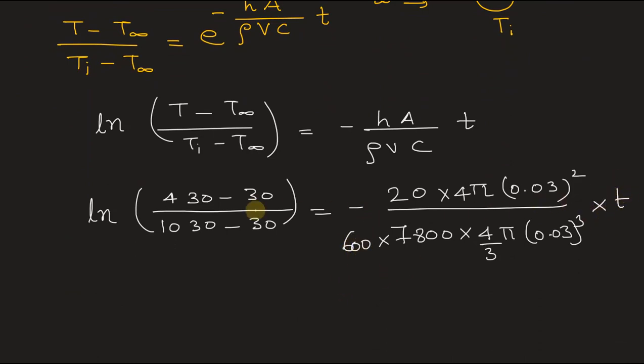Now we can find the value of t from here. Using digital calculator, we can get this value that is -0.9163.